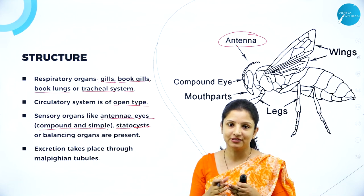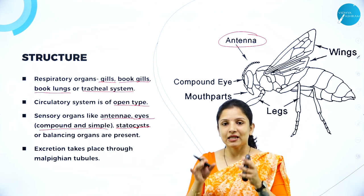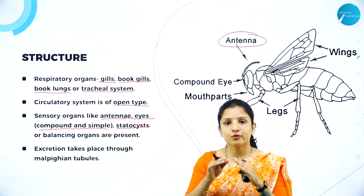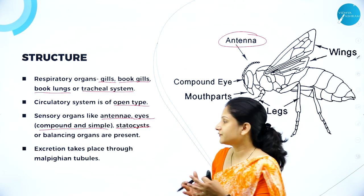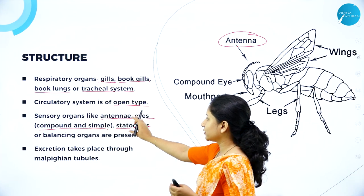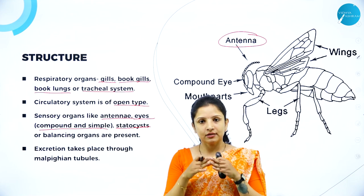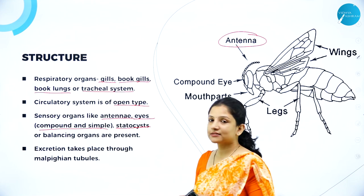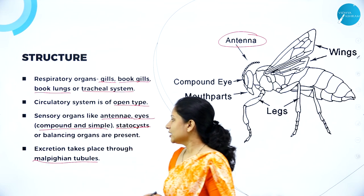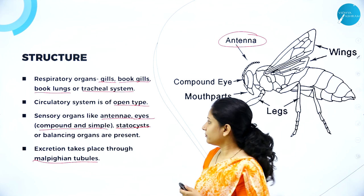Arthropods have balancing organs called statocysts. These statocysts help organisms balance during flight or when sitting on a fragile surface. Having antennae and statocysts are two important characteristics of arthropods. Excretion takes place through Malpighian tubules, which are the excretory units.